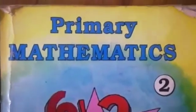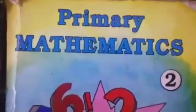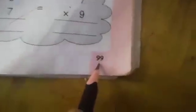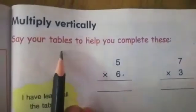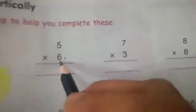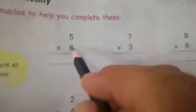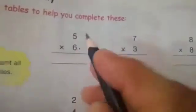Good morning students, take out your maths book. Today we will do page number 99 — multiply vertically. Say your tables. To help you complete this, you have learnt tables 2 to 10.